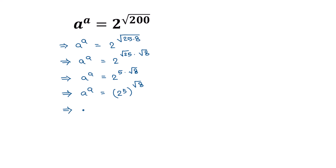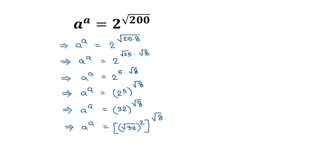So a to the power a is equal to 2 to the power 5, which is 32, all to the power of square root of 8. We can write 32 as square root of 32 squared, and the square and square root cancel, leaving 32 to the power of square root of 8.